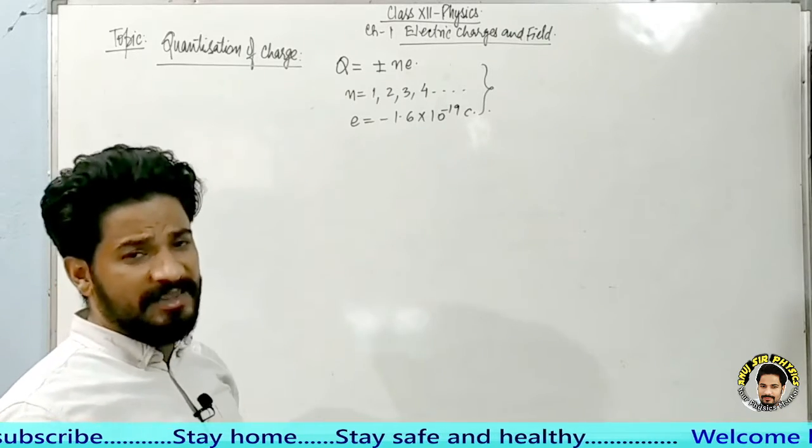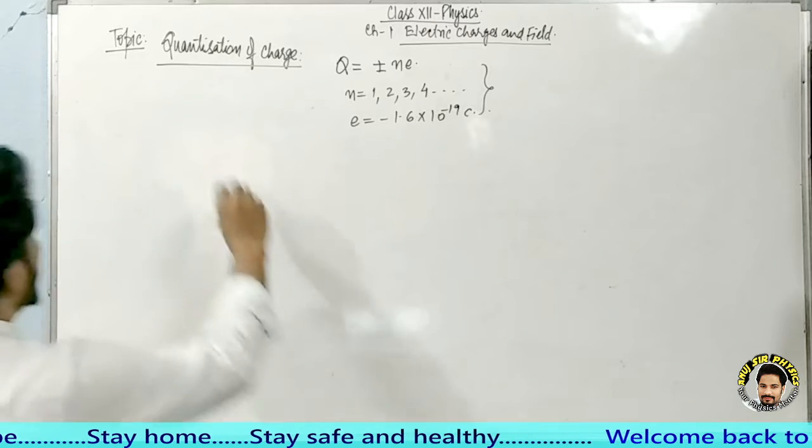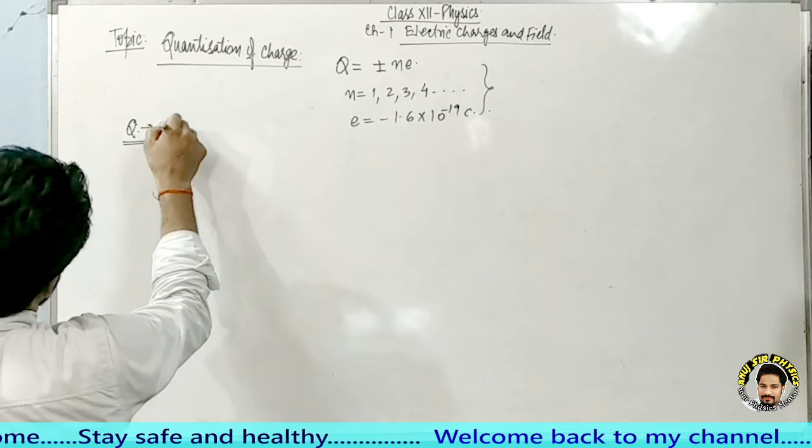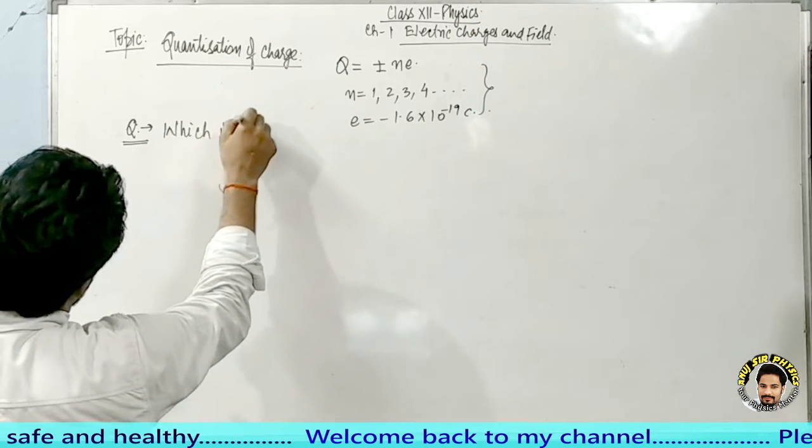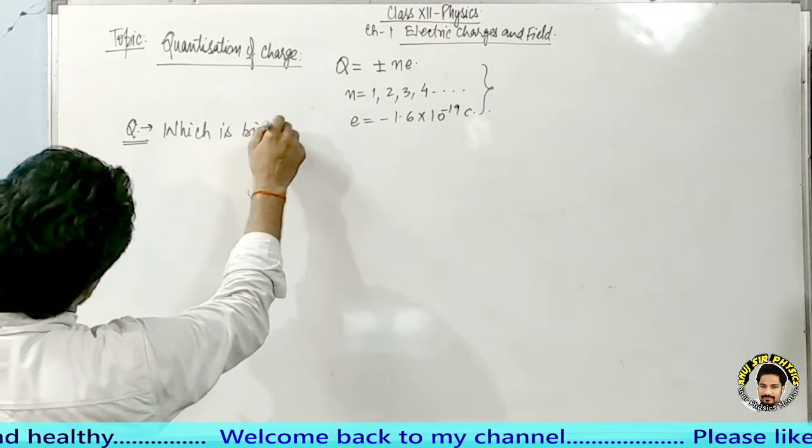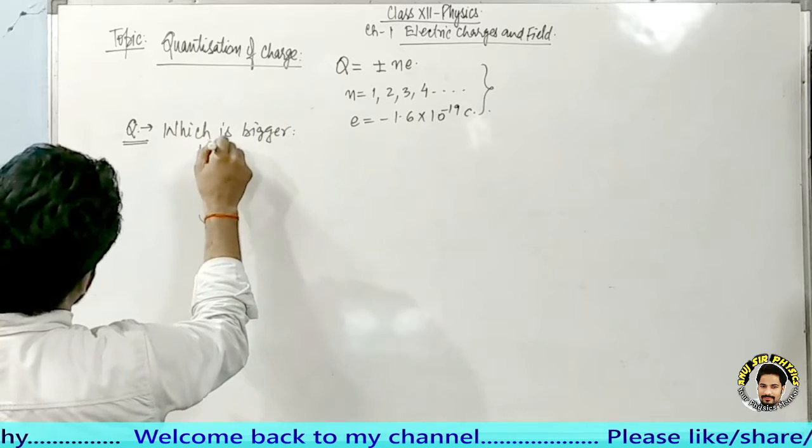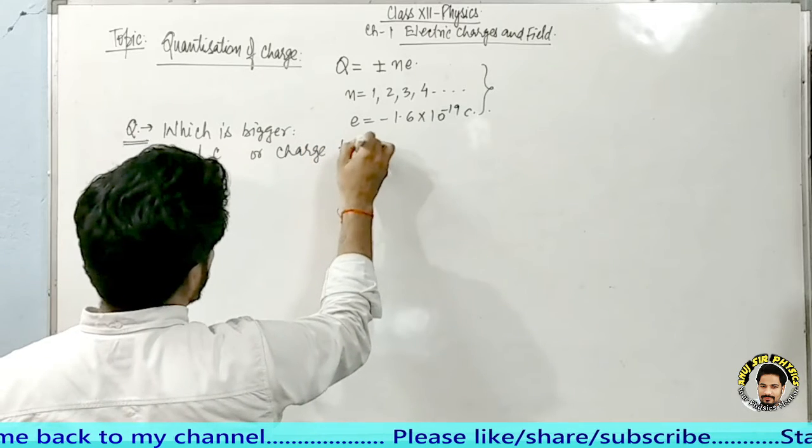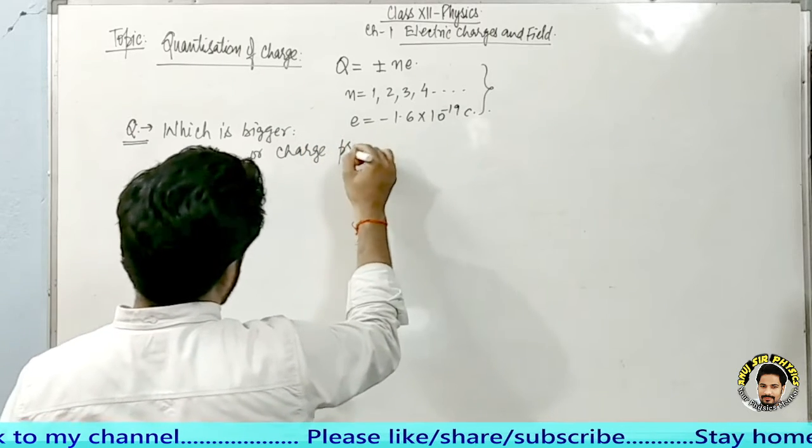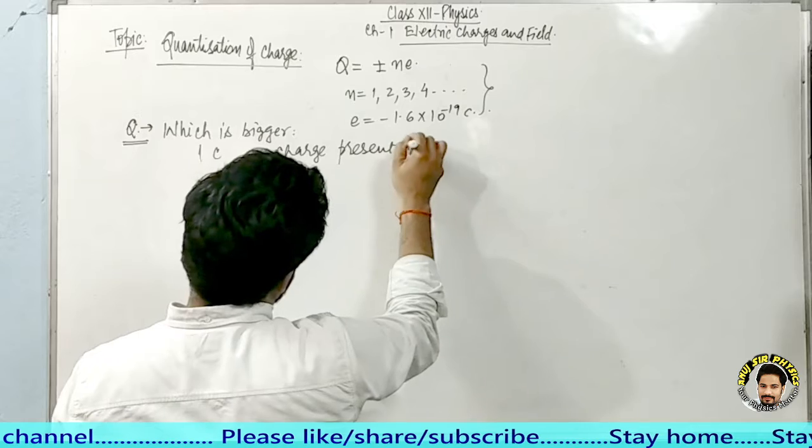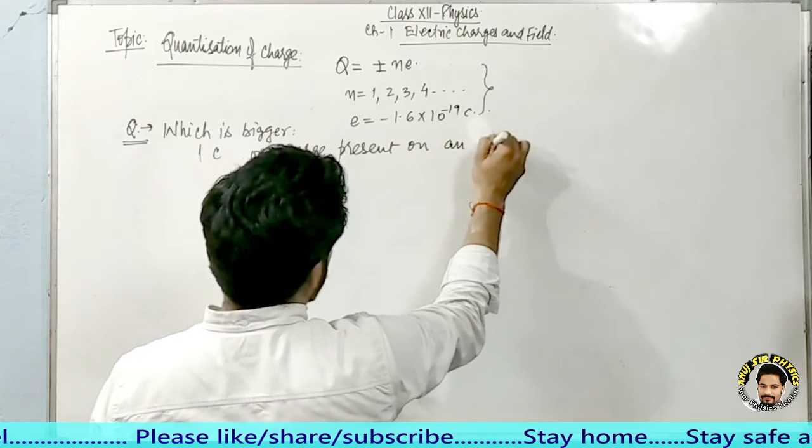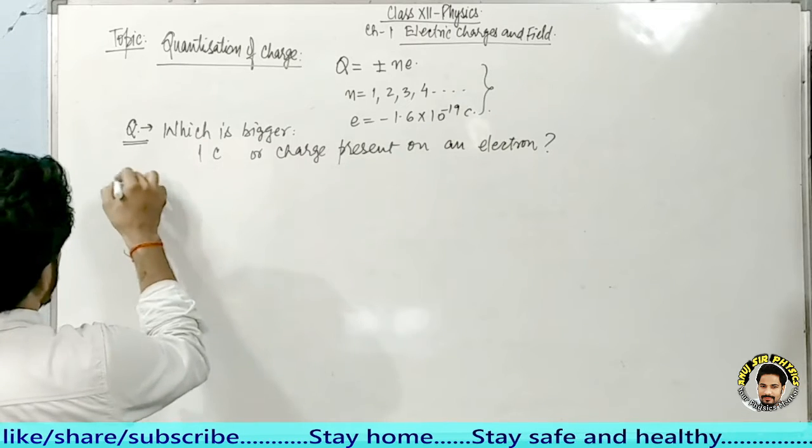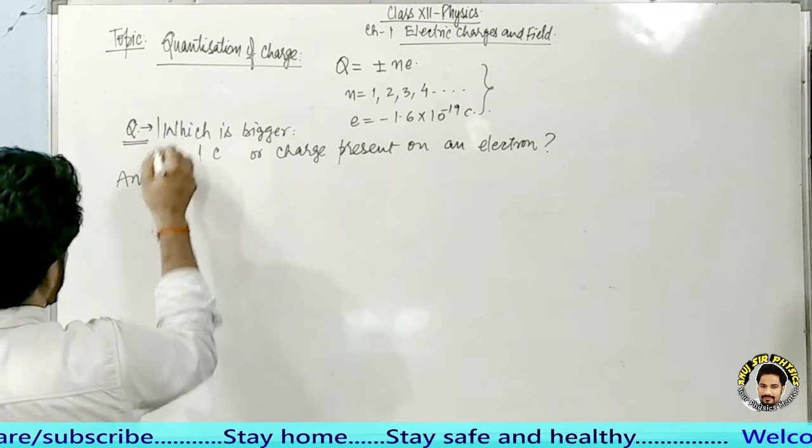Now I'll explain two numericals to you. So look, our first numerical is question number one: Which is bigger? You have to compare and tell which one is bigger - 1 coulomb or charge present on an electron? You have been asked this question. Now you have to give the answer. Let it be question number one, so it is answer number one.